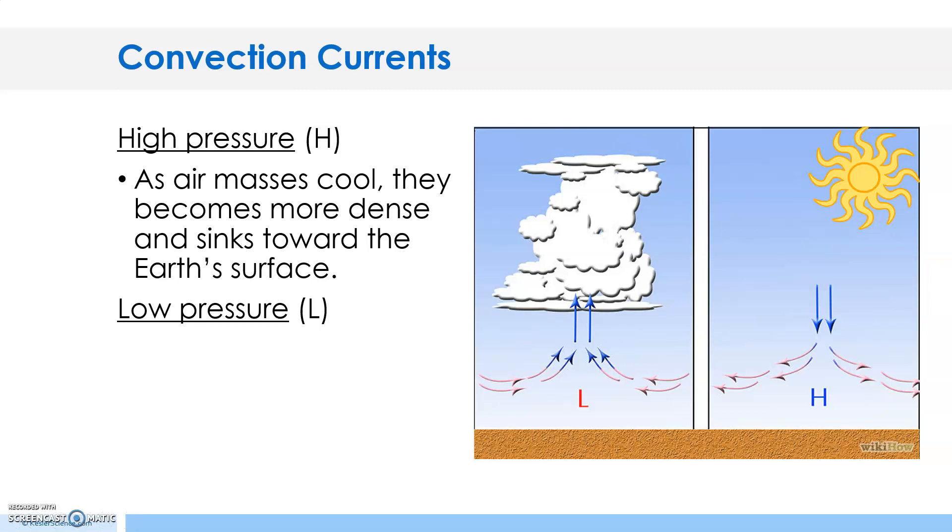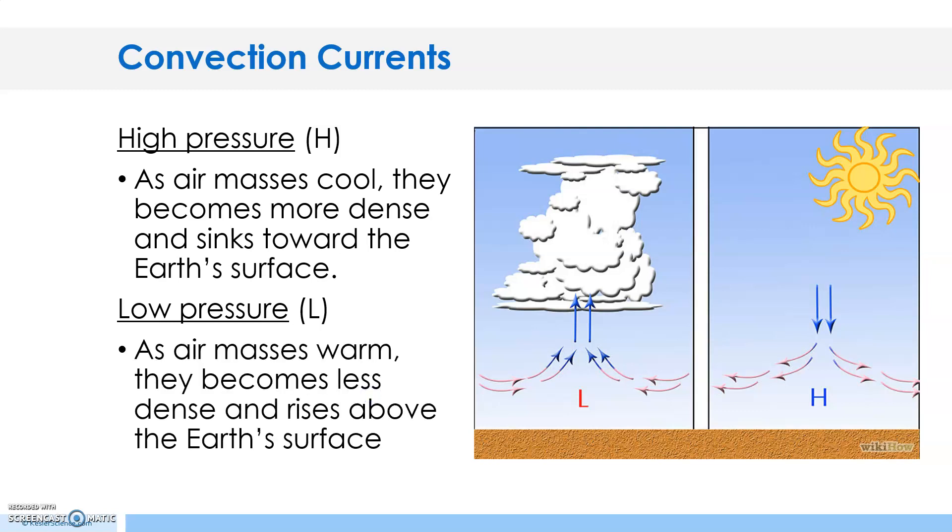High pressure: as air masses cool, they become more dense and sink towards the Earth's surface. Low pressure: as air masses warm, they become less dense and rise above the Earth's surface. Low pressure is represented by the red L, that's the warmer air. High pressure is represented by a blue H, that's the cooler air.